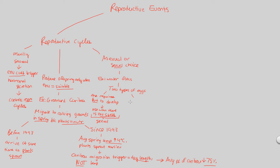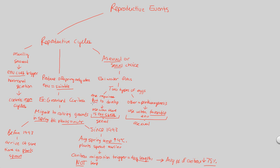The other type of egg involves parthenogenesis — the asexual side. This is an unfertilized egg that develops into an adult, and it's used when there is a favorable environment. Why? Because if you as an adult are successful in a favorable environment, you simply copy yourself exactly and produce offspring that will also be successful in that same environment. It's essentially a cloning process. So broadly, water fleas demonstrate the choice between asexual and sexual reproduction. We'll look at one more reproductive event in the next video.